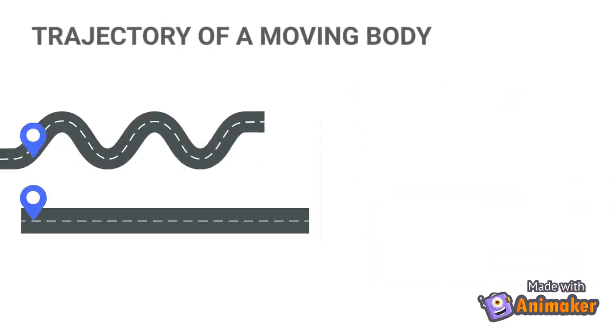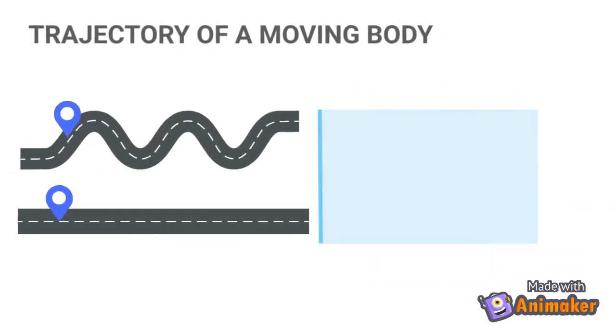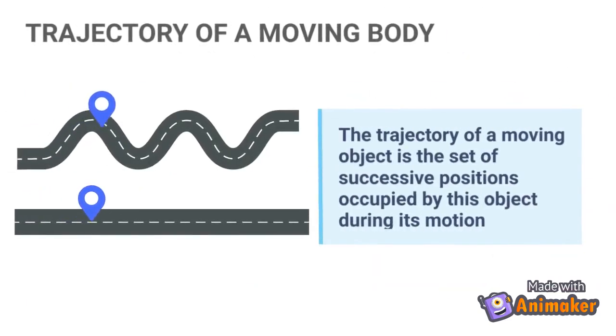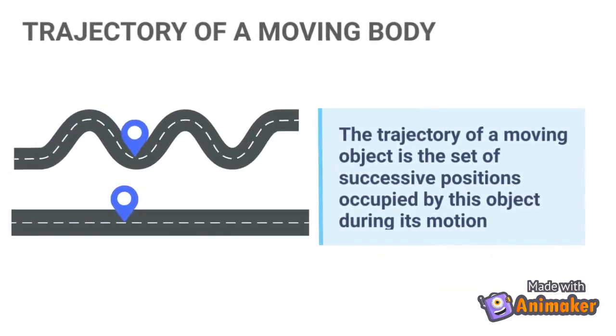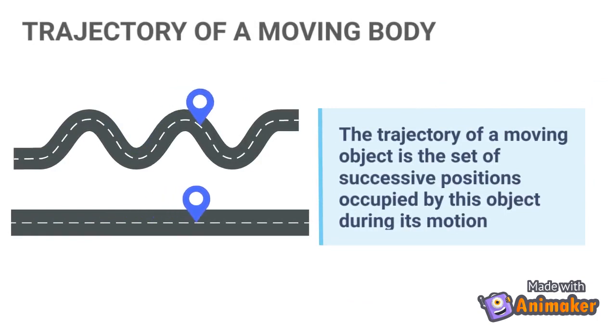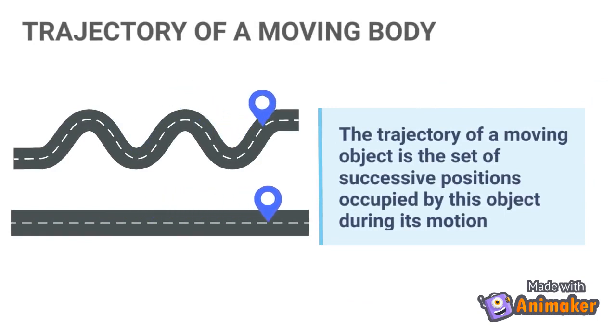An object in motion follows a path or trajectory. The trajectory of a moving object is the set of successive positions occupied by this object during its motion.